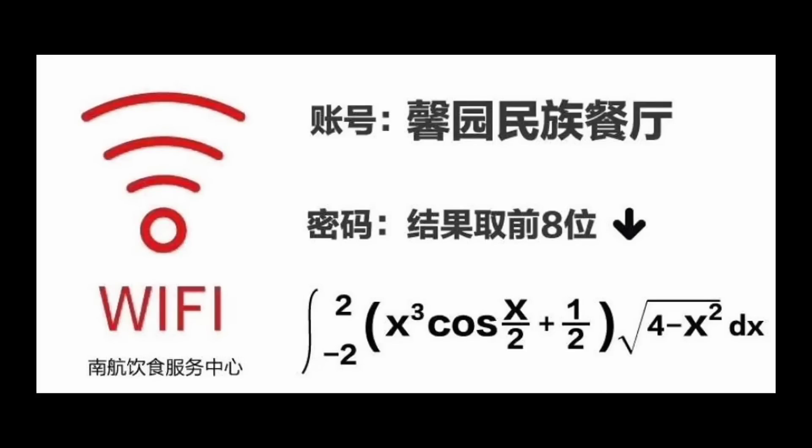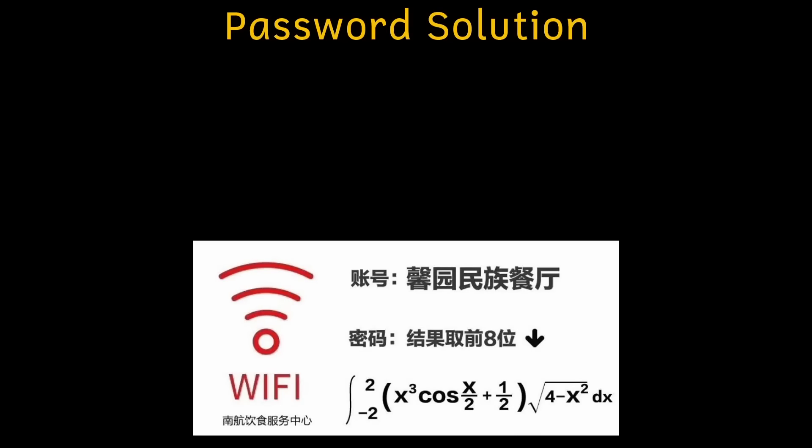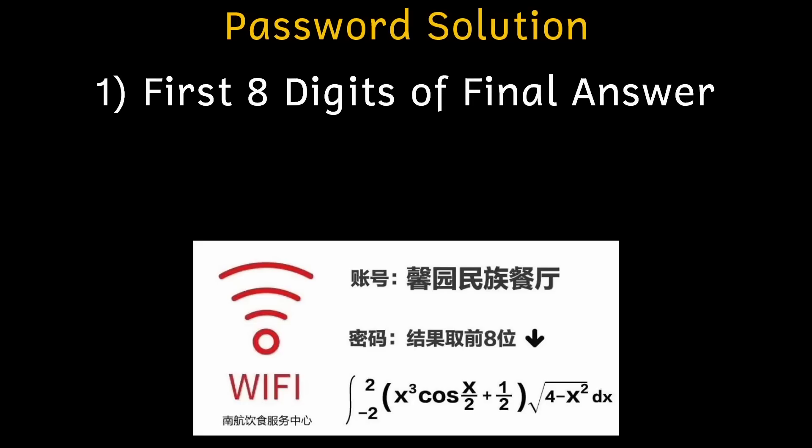This is a viral integral that students at the Nanjing University of Aero and Astronautics had to solve to access the internet in their dining hall. The password is the first eight digits of the final answer.